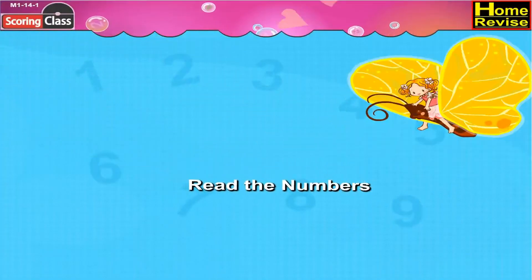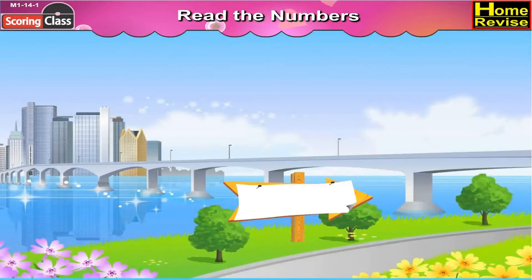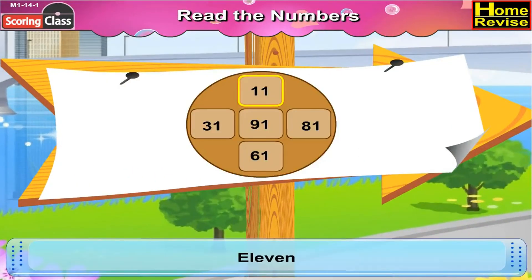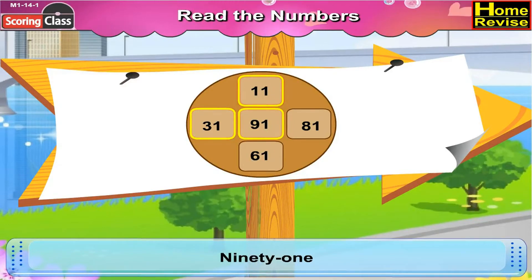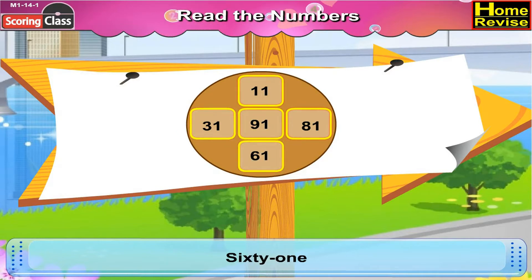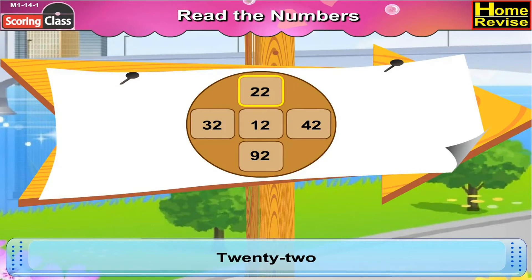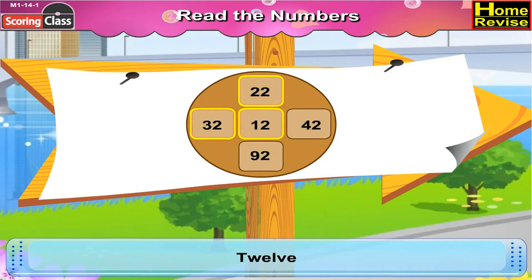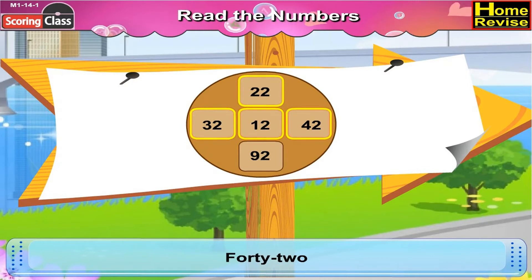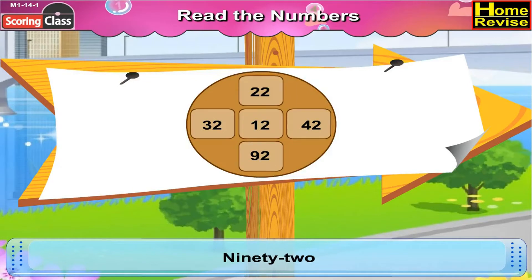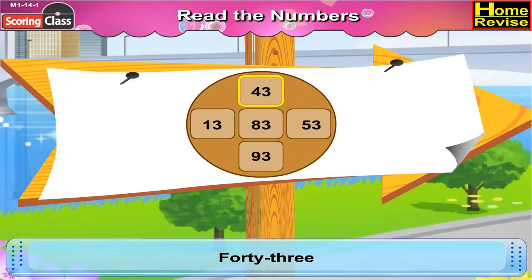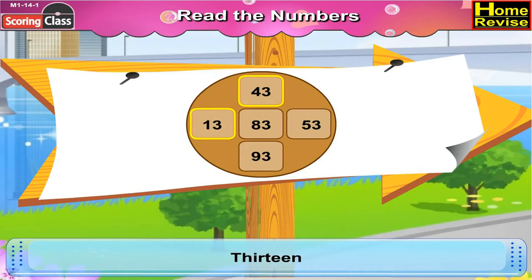Read the numbers: 11, 32, 32, 12, 42, 92. Then 43, 13, 83.